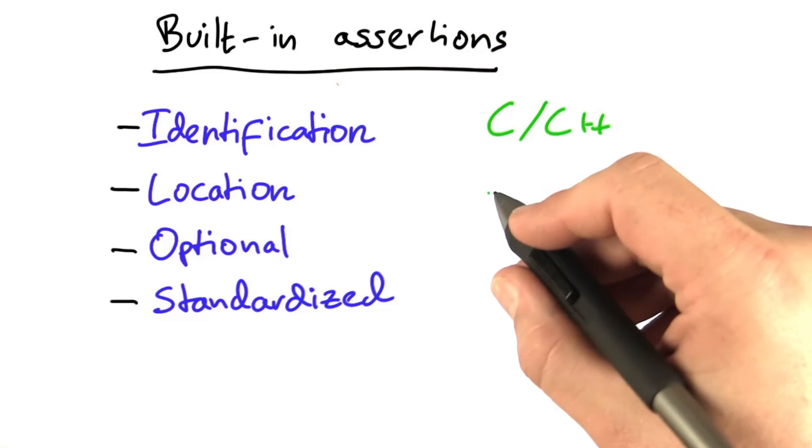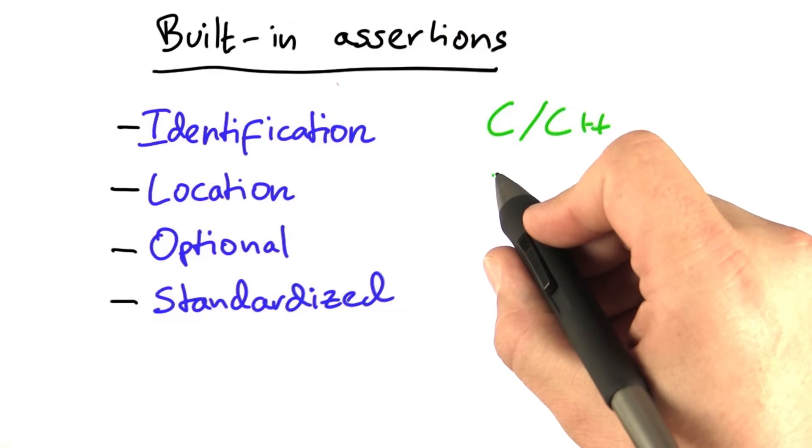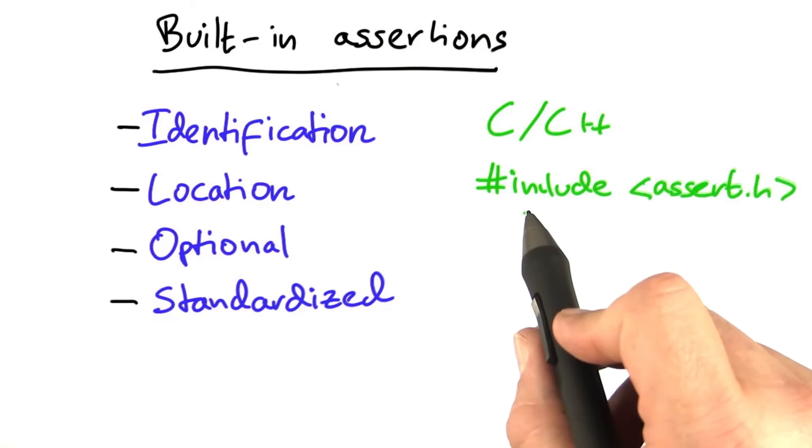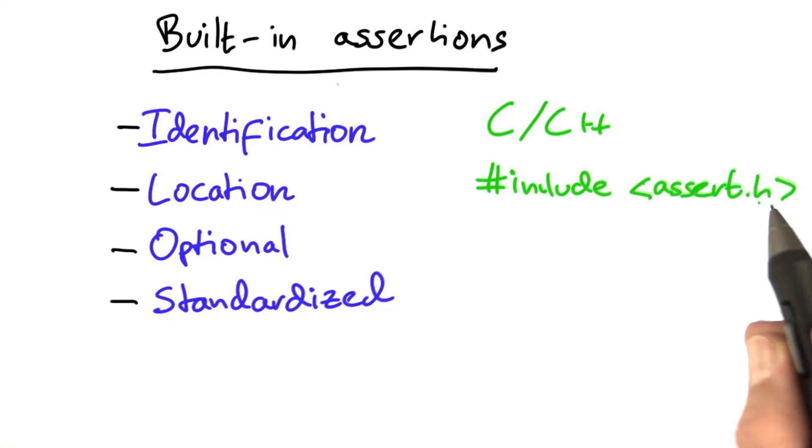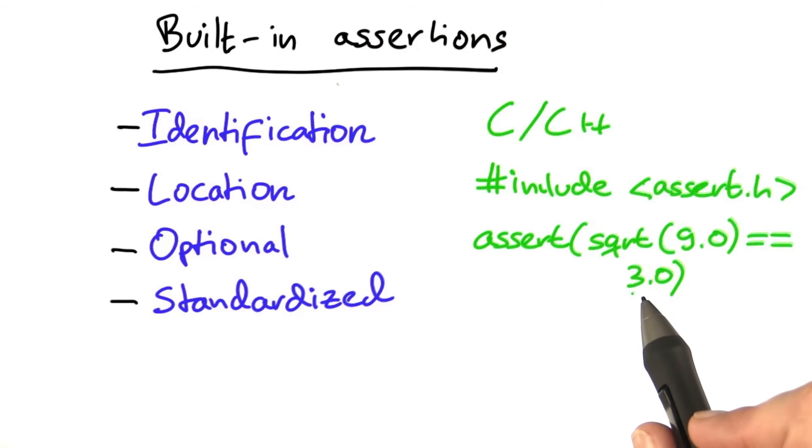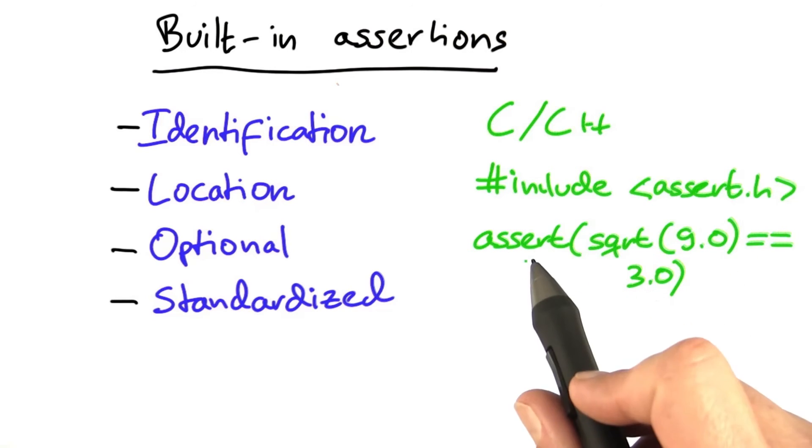In the languages C and C++, for instance, assertions come with a built-in function named assert, as in Python, which you get by including a special file, assert.h. And then, as in Python, you use assert, except that you put the argument in parentheses. And again, you pass the condition as an argument to the assert function.